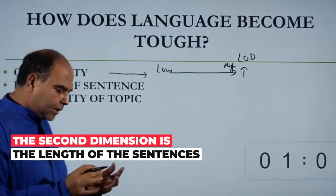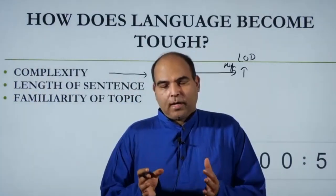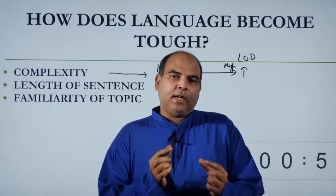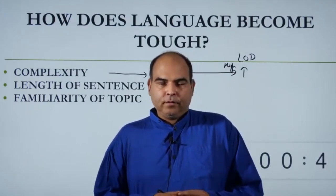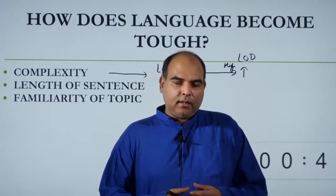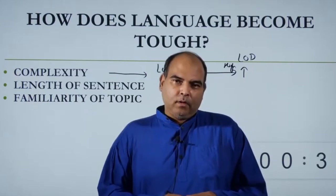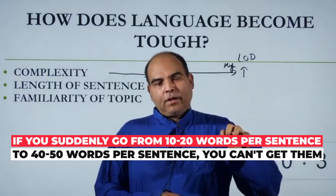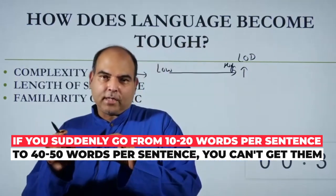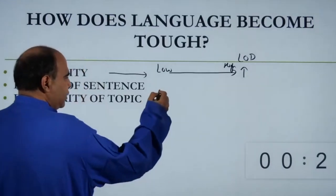The second dimension is the length of sentences — how long are the sentences? If you read a CAT passage or any of these top exams, you'll realize that comprehension passages have an average sentence length of 40 to 50 words. But if you read the Times of India, Indian Express, or any Indian magazine like India Today, the average sentence length is 10 to 20 words. So if you are always dealing with 10 to 20 word sentences and suddenly inside the CAT you are facing complex language and 40-word sentences, you're out of depth.